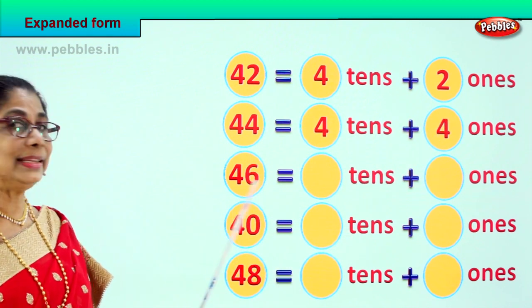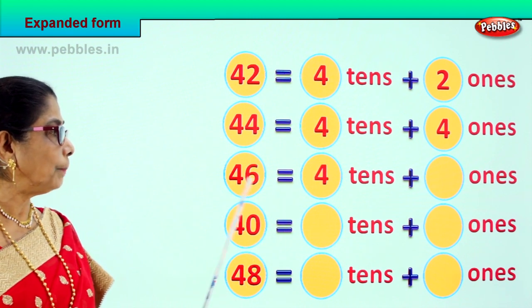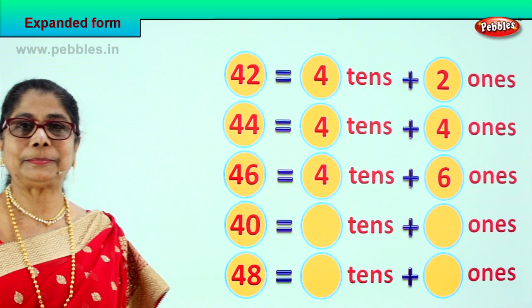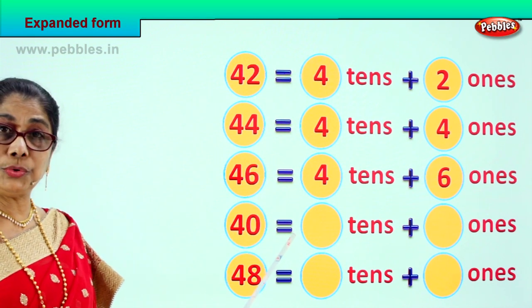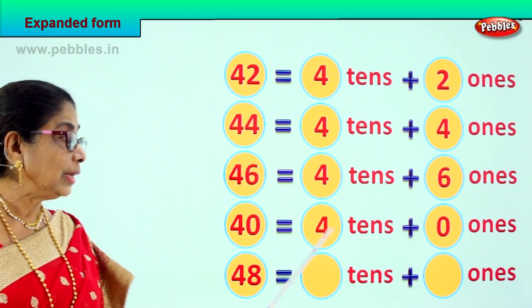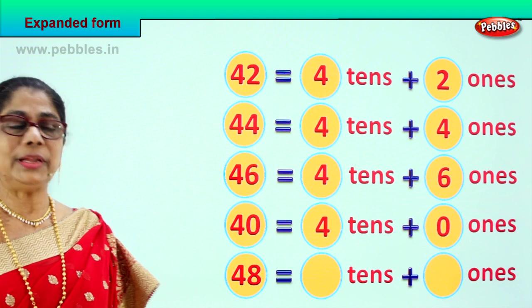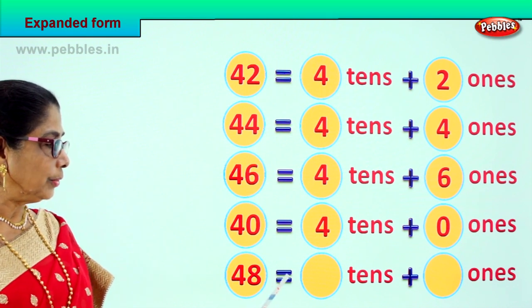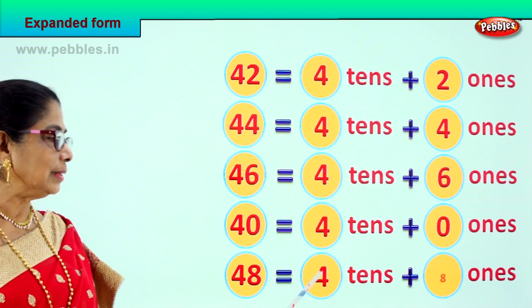46 is equal to 4 tens plus 6 ones. 40 is 4 tens and 0 ones. 4 tens plus 0 ones. And 48 is equal to 4 tens plus 8 ones.